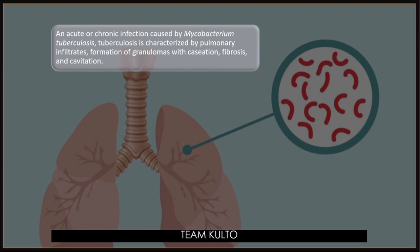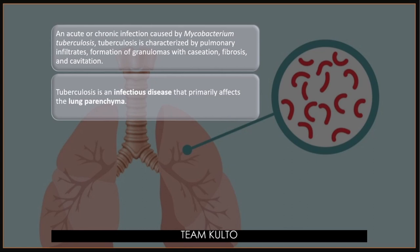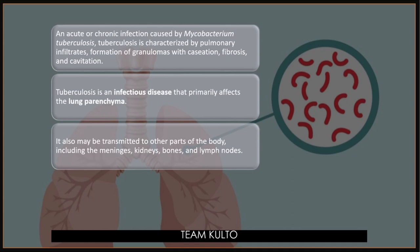Tuberculosis is an infectious disease that primarily affects the lung parenchyma. It may also be transmitted to other parts of the body including the meninges, kidneys, bones, and lymph nodes. If PTB is not caught early, the Mycobacterium tuberculosis can travel to those other parts of the body and cause further damage to the patient.